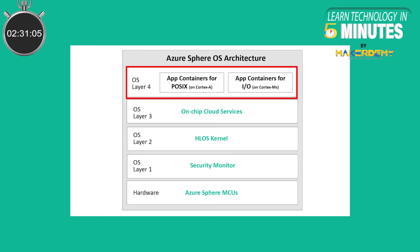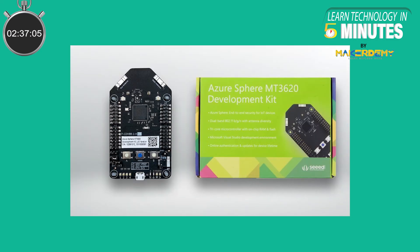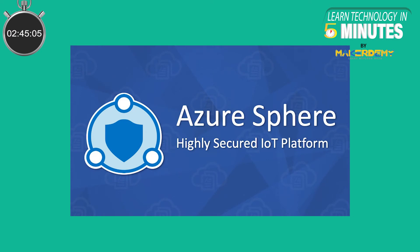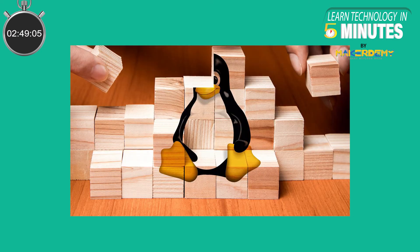OS layer 4 is an app container where real-time applications and high-level applications are executed. Azure Sphere OS is specifically designed for Azure Sphere devices and supports no other Linux-based operating system like Ubuntu, because Azure Sphere OS provides a secured environment.